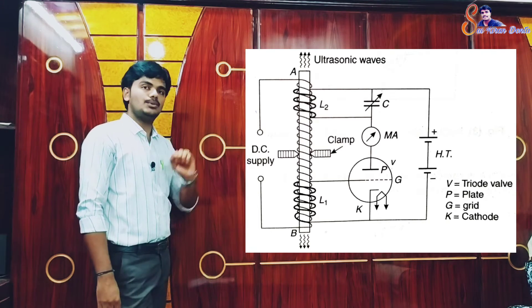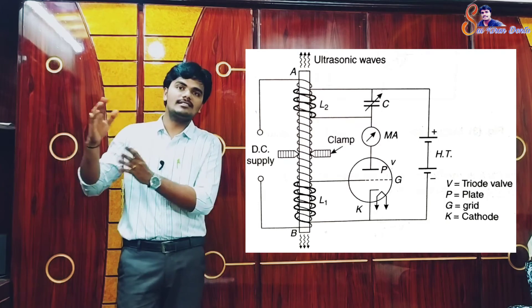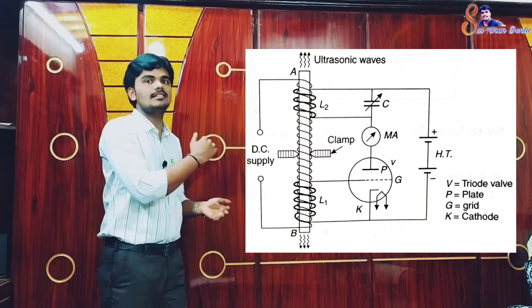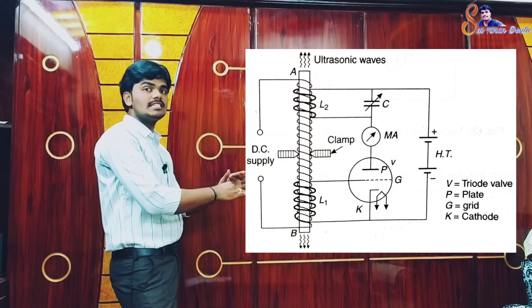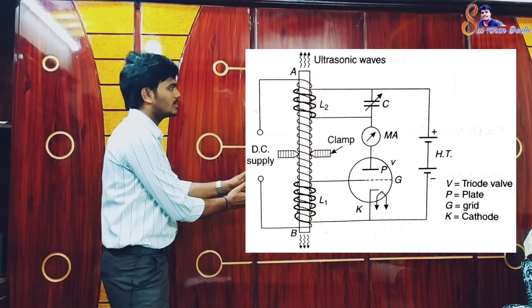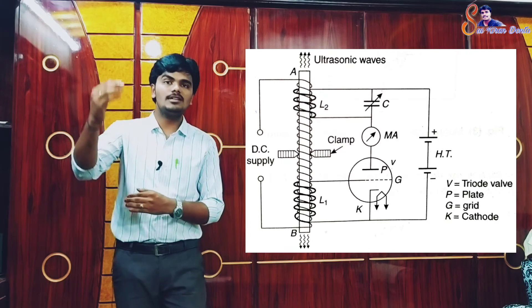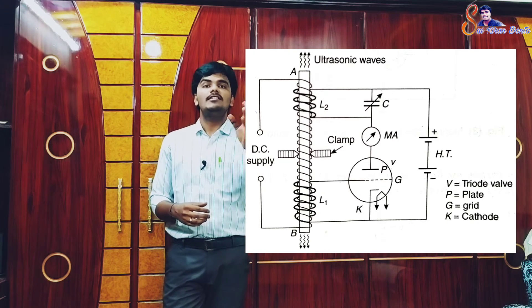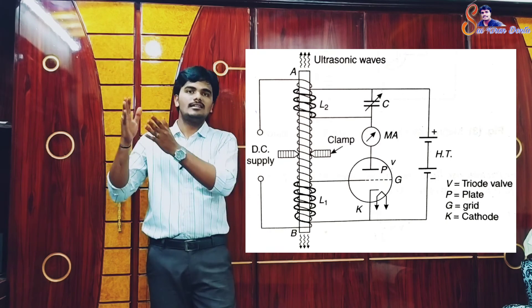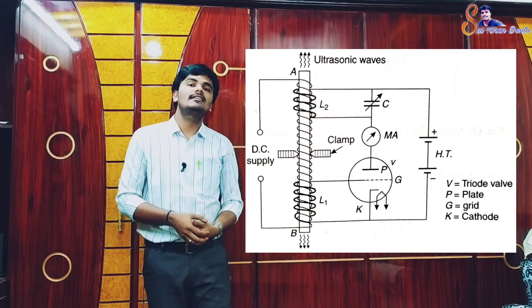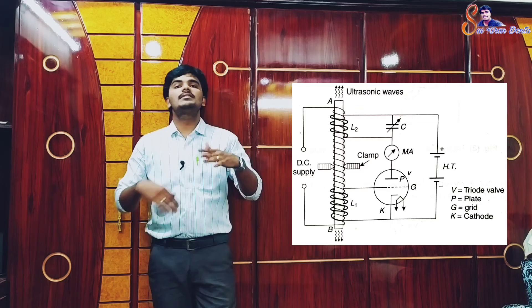The EMF acting on the grid produces an amplified current change in the plate circuit, that is, in coil L2. In this way, the plate current builds up to a large amplitude with a frequency determined by the frequency of the longitudinal vibration of the rod. Thus, the vibrations of the rod are maintained.